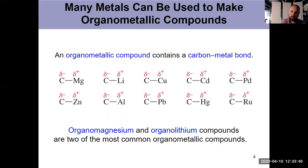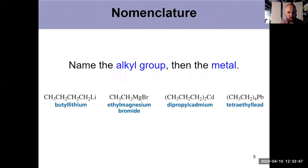Quick nomenclature: if you're naming an organometallic compound, you name the alkyl group then the metal that it's bonded to, and if there's a counter ion present you name that last.